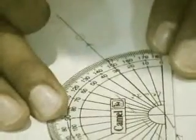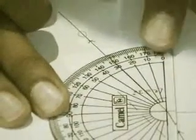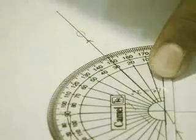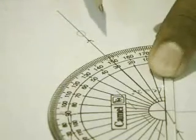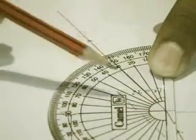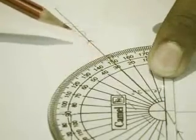By putting the protractor and measuring the angle, we find that the angle is exactly 30 degrees. So what we have studied is that the angle of incidence is equal to the angle of emergence.